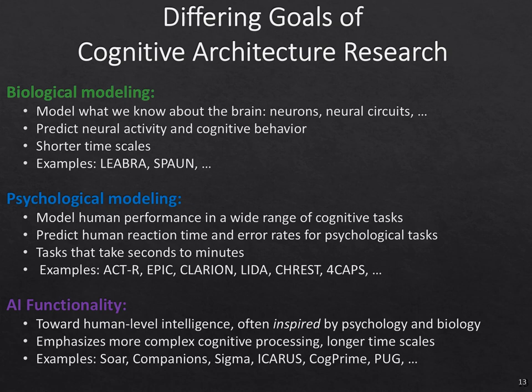We see these three different bands, though any one system might actually cross them. For example, ACT-R has been used to make some predictions about the brain, but also to build real systems of practical use. Similarly, in SOAR, most of our emphasis has been on building AI applications, but we have also sometimes used it to make predictions about human reaction times and error rates. So we see a blending of the goals in many of these systems.